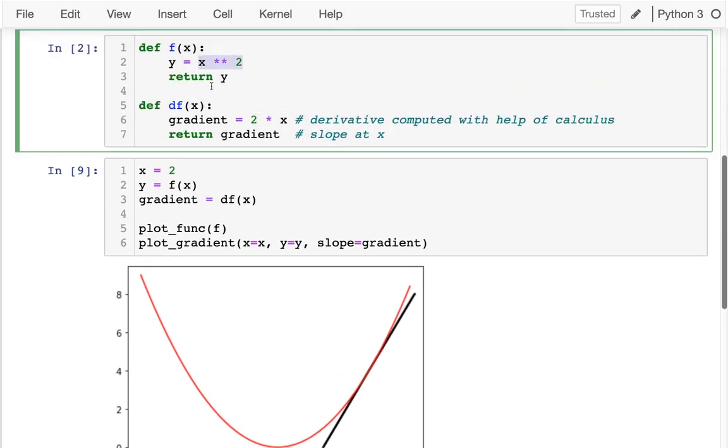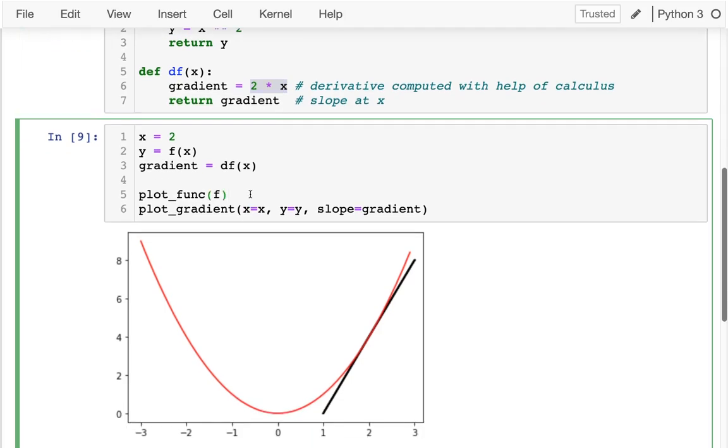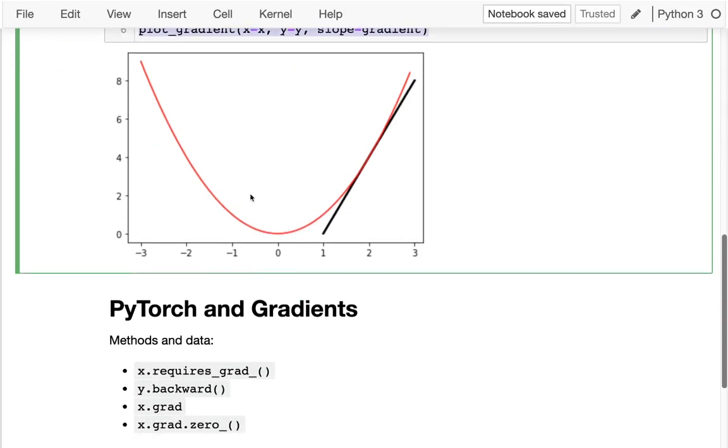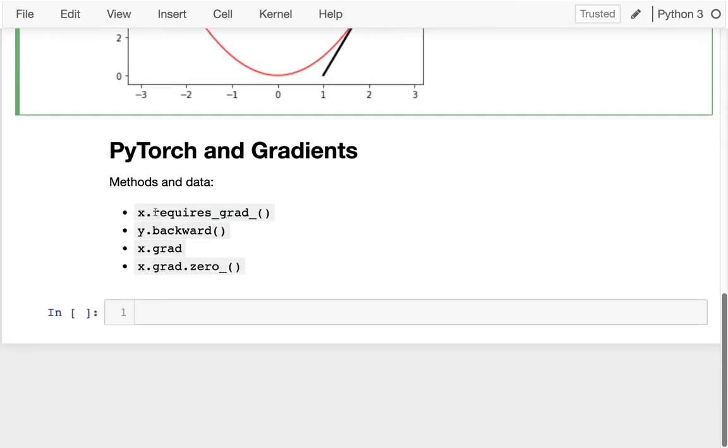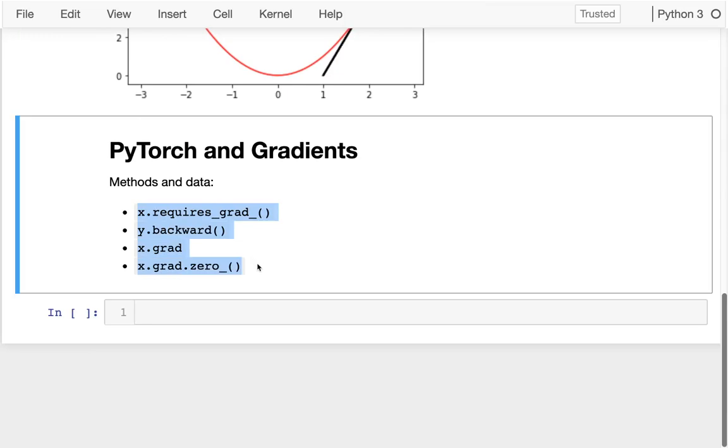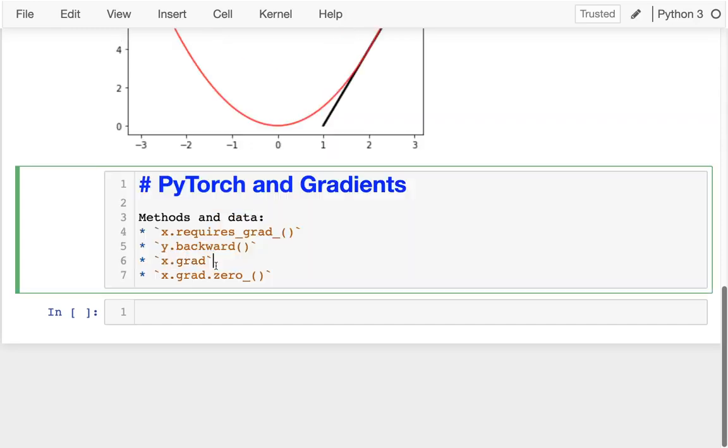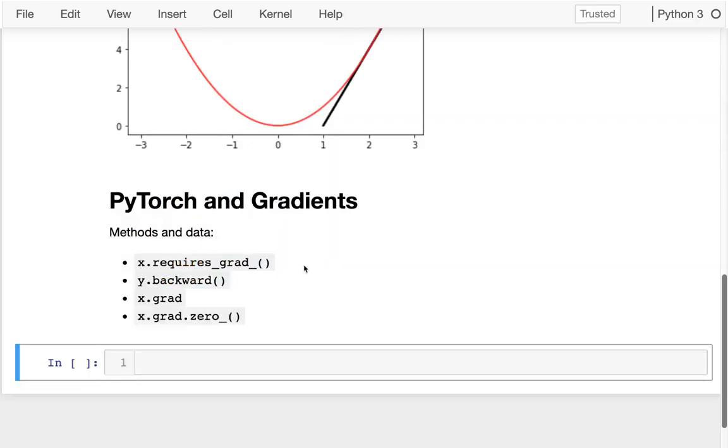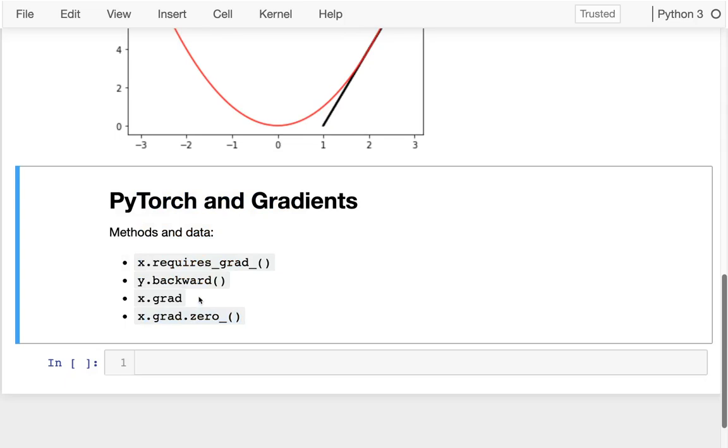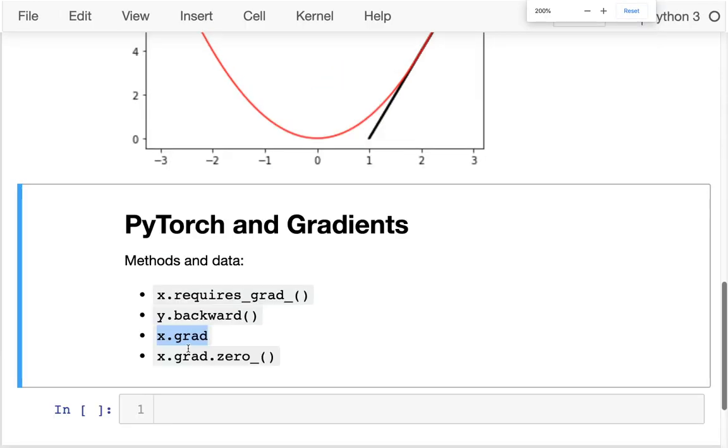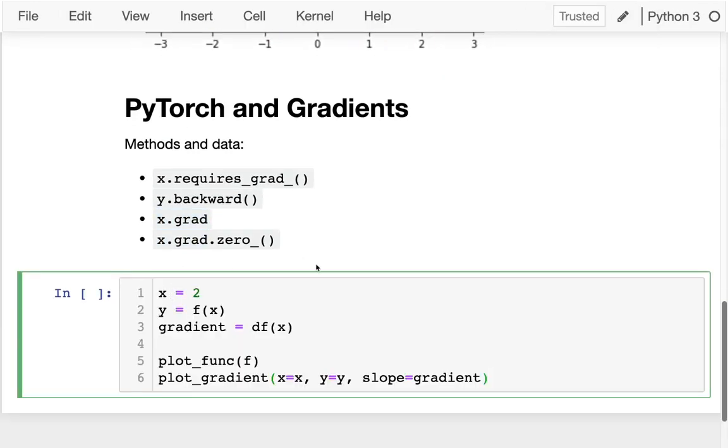So this is easy enough. But PyTorch can do it automatically for us. That's going to help when we have more complicated functions to deal with. So let me copy this code down here. And in PyTorch, there's four things we have to learn. We have these three methods and then there's also this important gradient attribute that we can have on certain tensors. So I'm going to paste the same thing.